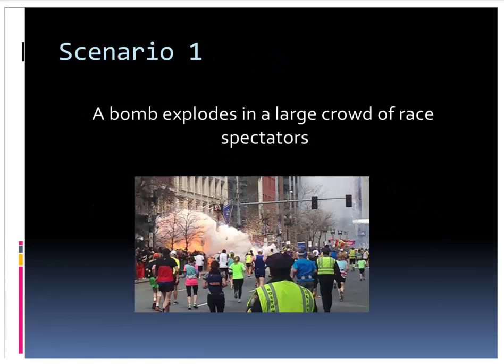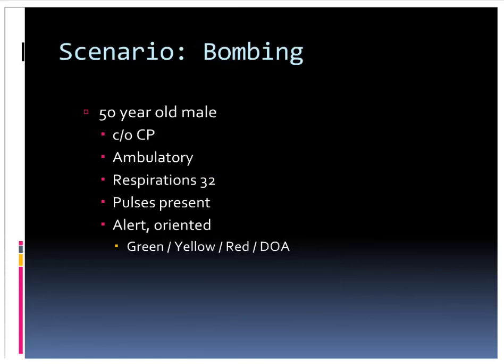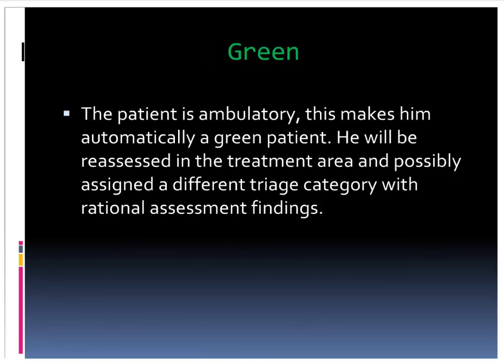Scenario one: a bomb explodes in a large crowd of race spectators. Patient is a 50-year-old male with a chief complaint of chest pain. He's ambulatory — able to walk — breathing 32 times a minute, has pulses at his wrist, and is able to follow commands. As soon as you heard 'ambulatory' or 'able to walk,' this patient is green. The rest of that information is irrelevant. He'll be re-evaluated in the casualty collection point; if his breathing looks concerning, he'll be re-triaged there.